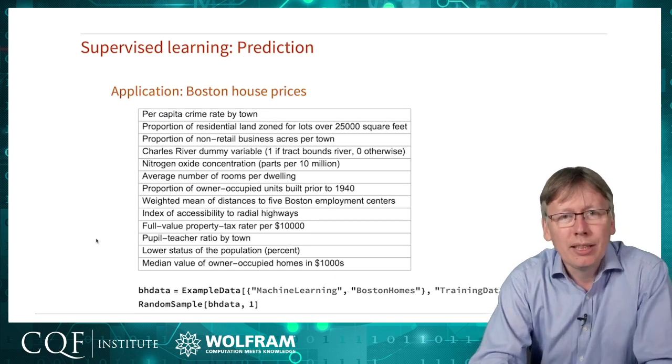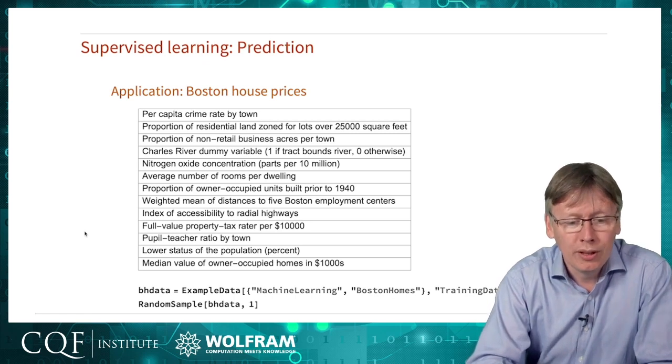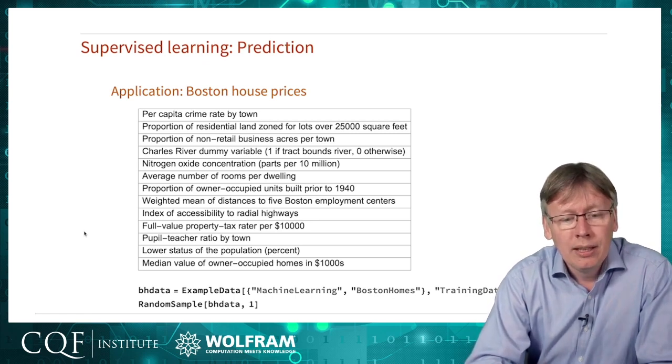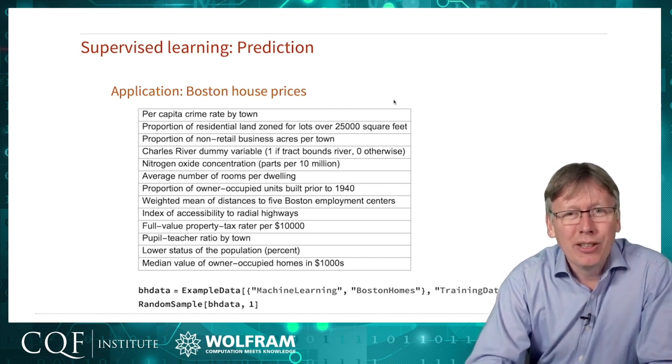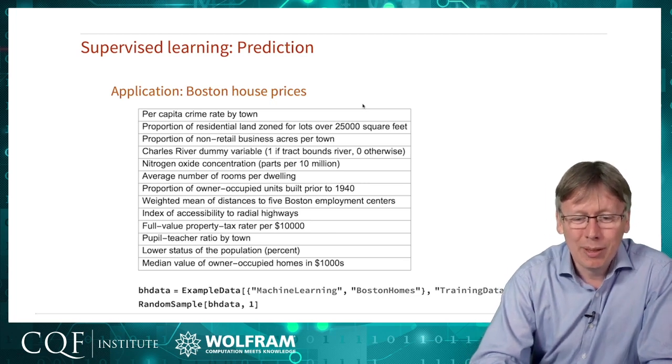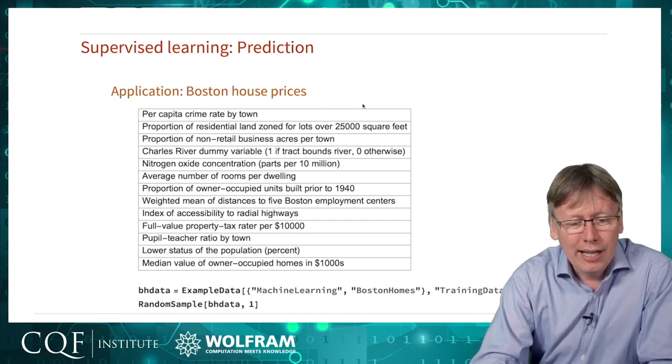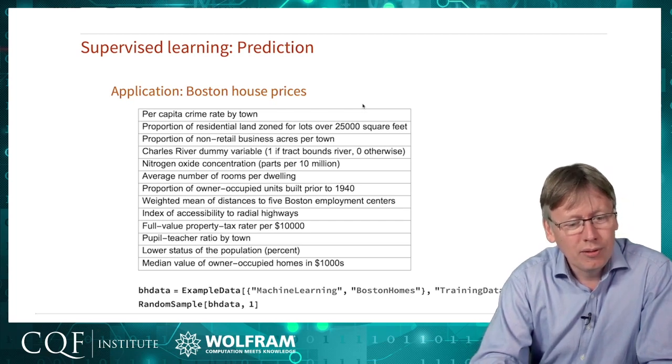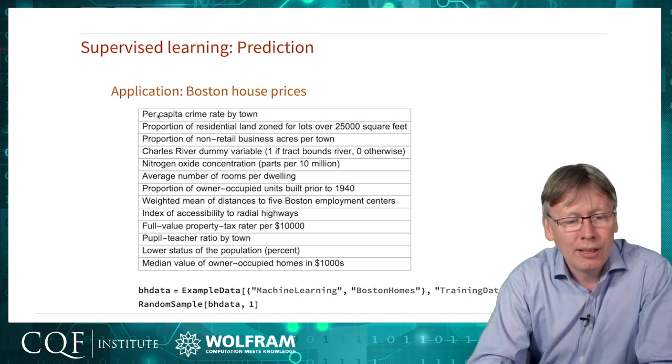Let's do a slightly richer example that is more multidimensional, where machine learning becomes much more useful. This is another classic example: a dataset of Boston house prices. The data is rather out of date. This dataset was collected some years ago that had a dozen or so input values that might have predictive value for how much a house is worth.